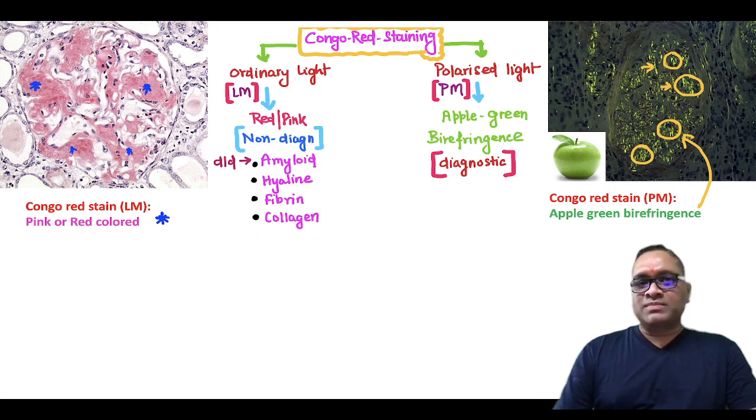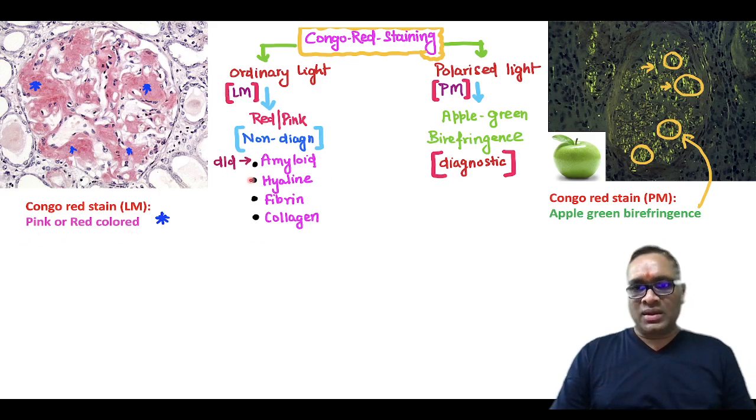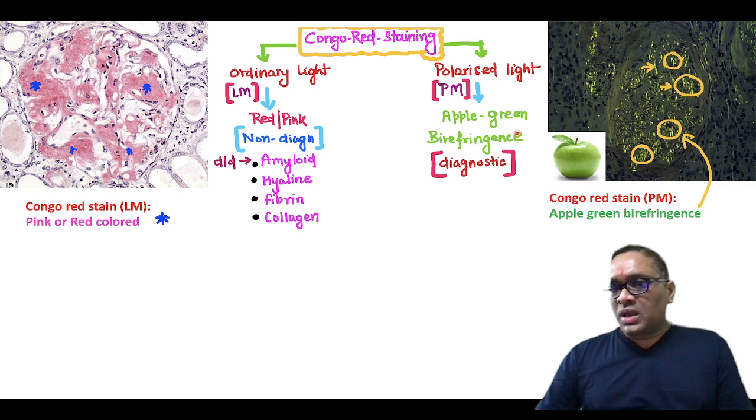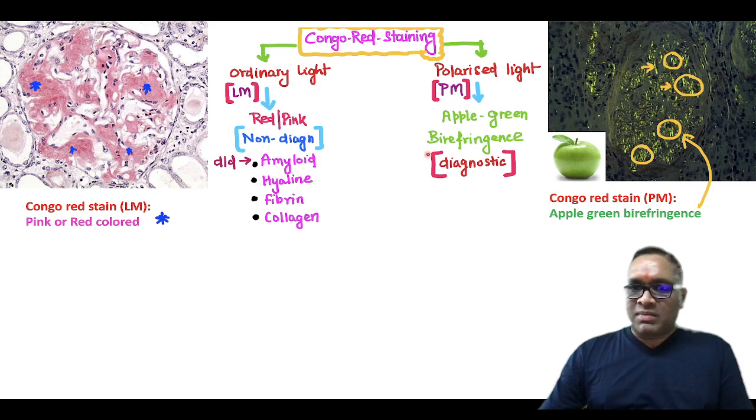This red amorphous material with Congo red staining under light microscopy is non-diagnostic—it could be anything. But when you use Congo red staining with polarized microscopy and polarized light, you find apple-green birefringence, which is diagnostic of amyloidosis.